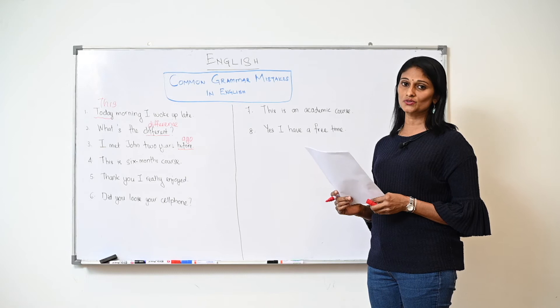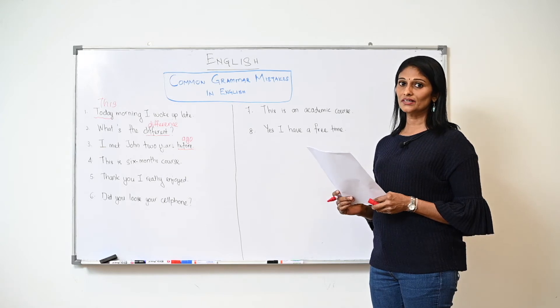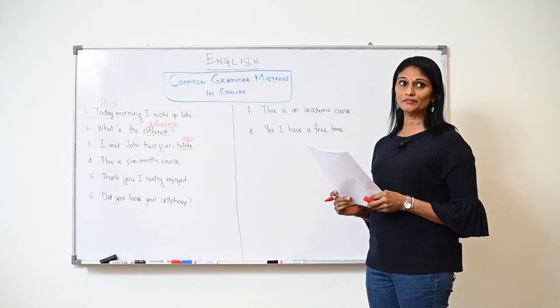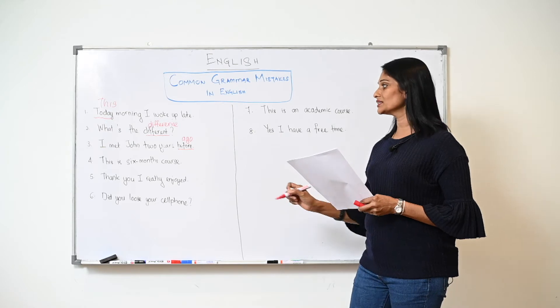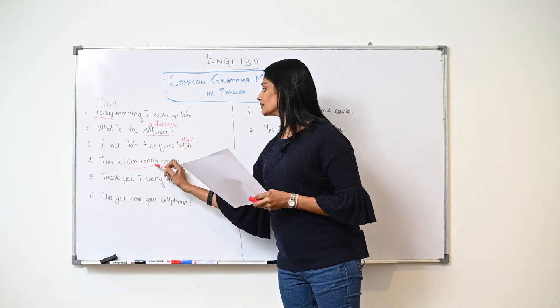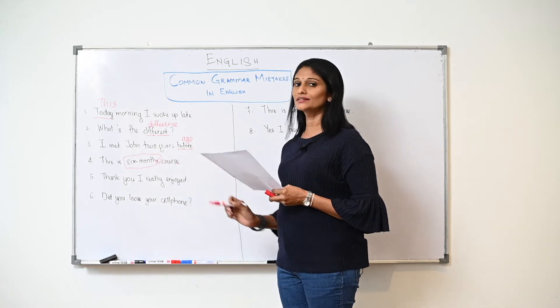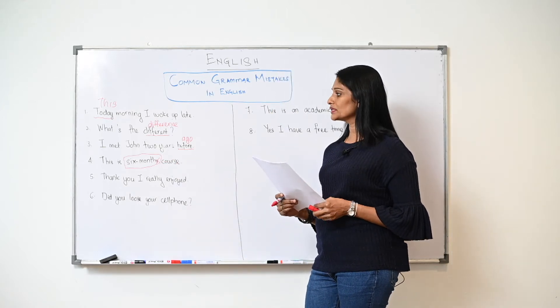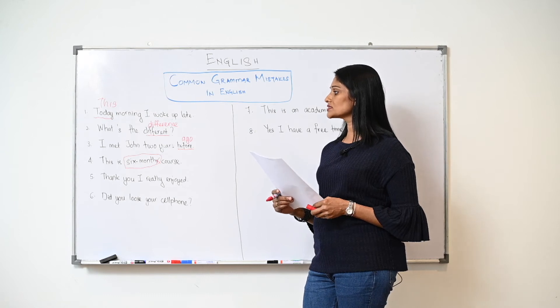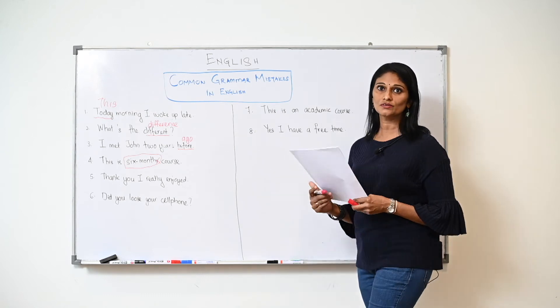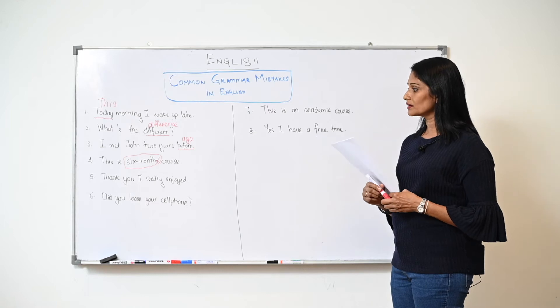Number four: "This is six months cost." It sounds correct, right? But actually it's not. The error here is "six months" - it's just the 's' here. We should say "this is six month cost."